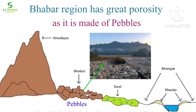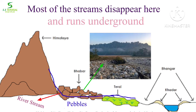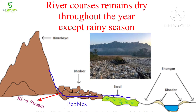It has great porosity as it is made of pebbles. That's why most of the streams sink in this region and disappear, running underground. So river courses remain dry throughout the year in this region, except during the rainy season.